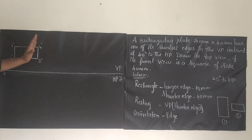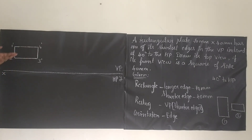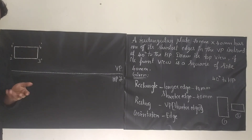We can draw the rectangle. For naming, we can give the corners as 1, 2, 1-dash, 2-dash, 3-dash, 4-dash. Alternatively, A-dash, B-dash, C-dash, D-dash can also be used.